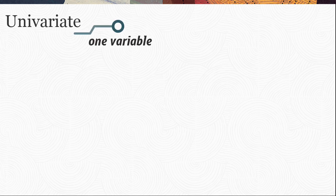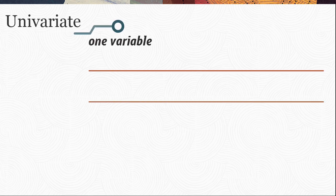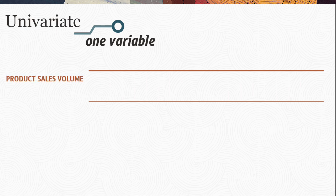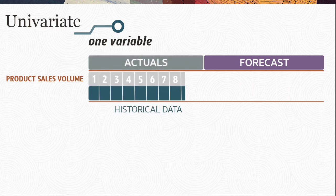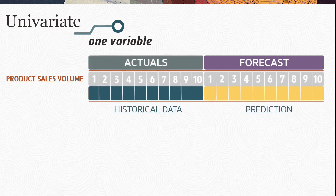Univariate creates predictions based on one variable. For example, you want to run a prediction on product sales volume — that's the one variable you're trying to forecast. A univariate algorithm will simply take historical data for that variable and create predictions based on the data for that variable.